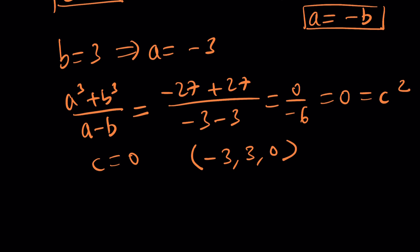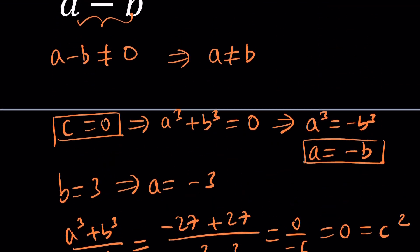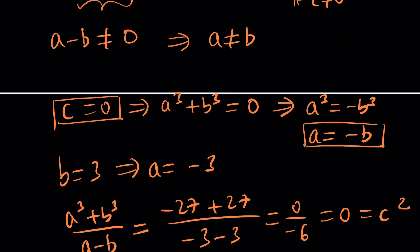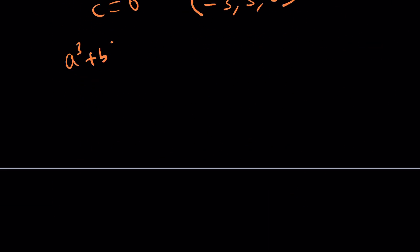Wait a minute. Is that the only way this will work? So, here's the thing. If c does not equal zero, we know one thing, that c squared is greater than zero. We've already looked at c equals zero, though. Let's go ahead and look at this next. So, this expression needs to be greater than zero. a cubed plus b cubed divided by a minus b is greater than zero.